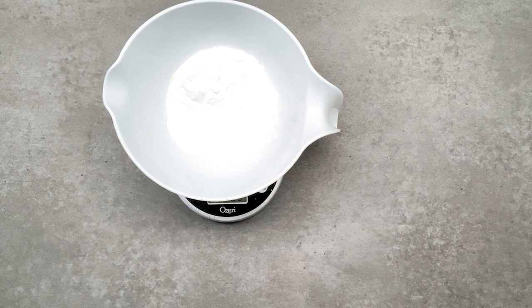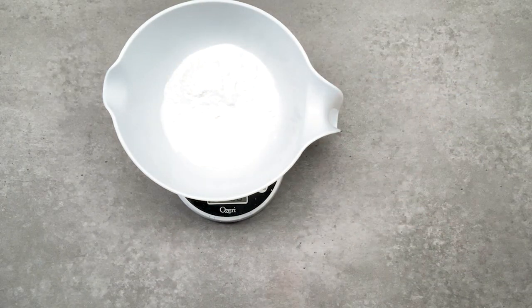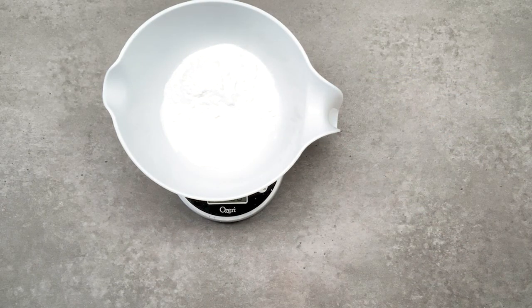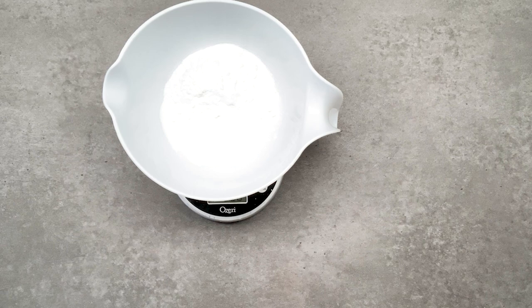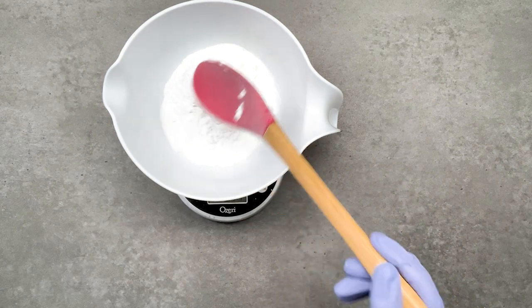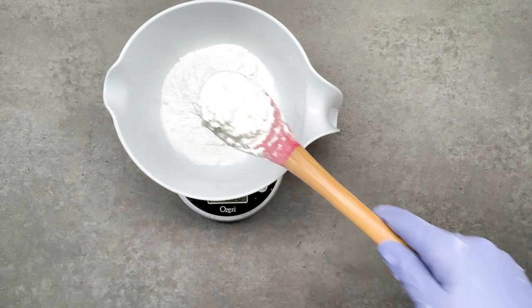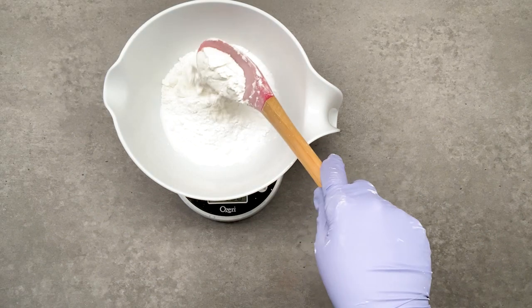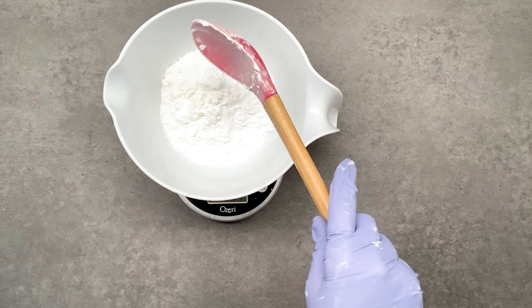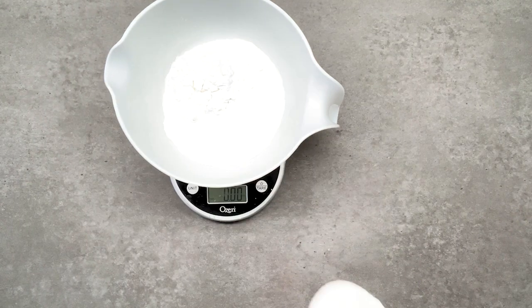Then 2 ounces of cream of tartar, next is one and a half ounces of cornstarch and a half ounce of tapioca starch.